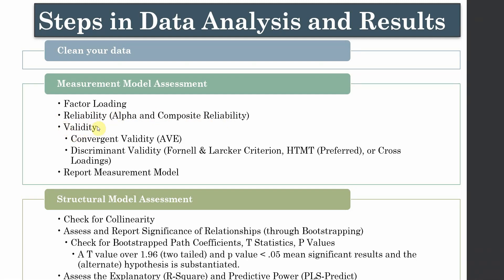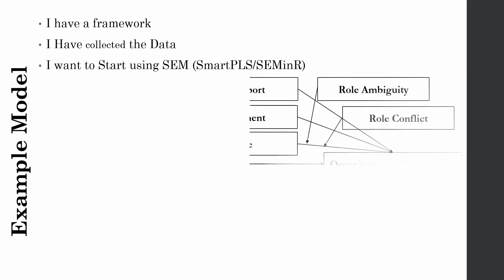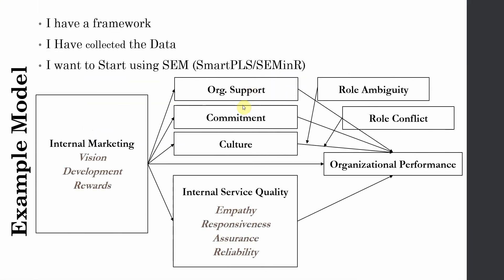Once your reliability is assessed, the next step is to assess construct validity. In construct validity we have two forms: convergent validity, assessed using average variance extracted (AVE), and discriminant validity, assessed using different techniques available in SmartPLS 4 — the FIMIX marker criterion, which is an older method; HTMT, which is the preferred method; and cross loadings.